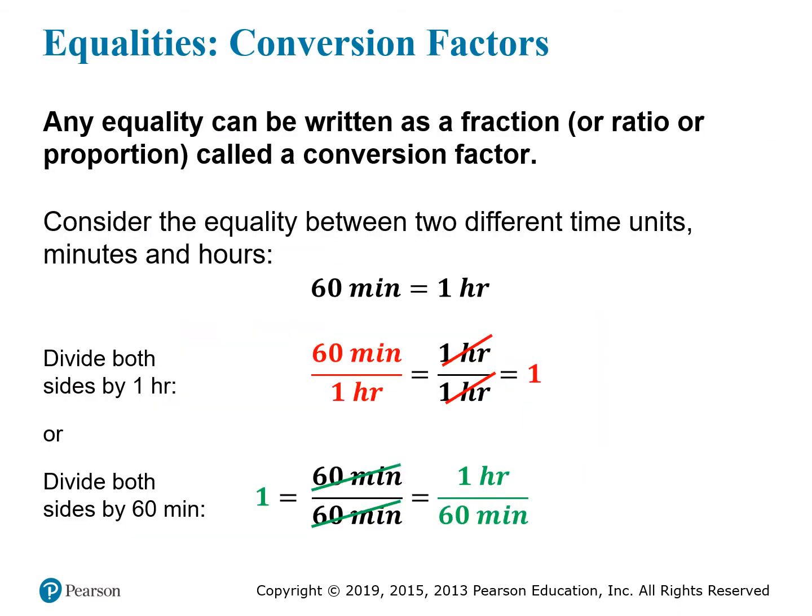Every relationship between units can be written as a mathematical equation, and any mathematical equation can be transformed into what's called a conversion factor. As an example, consider the equality between two different time units: 60 minutes equals 1 hour.